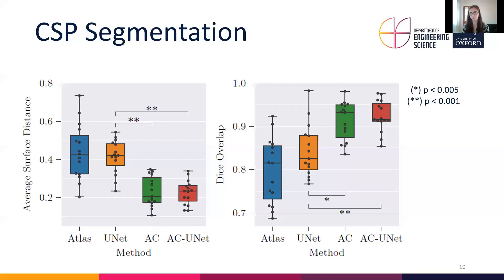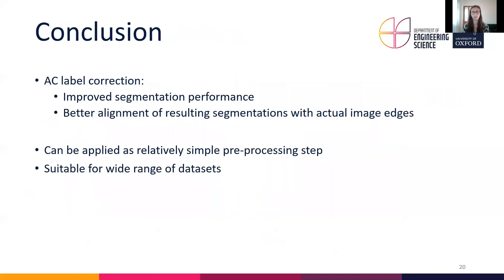The advantage of using active contours in combination with a U-Net is that we don't need any initial contours for future segmentations or future scans. To conclude: the active contour label correction results in improved segmentation performance, and most notably a better alignment of the resulting segmentations with the actual image edges. It can be applied as a relatively simple pre-processing step, and although we only showed it here for ultrasound scans, we think it's suitable for a wide range of datasets.